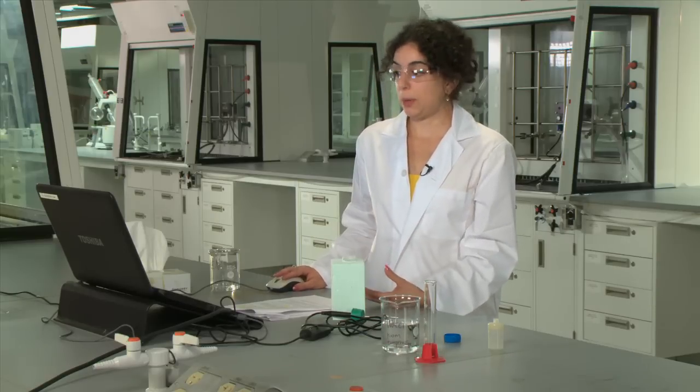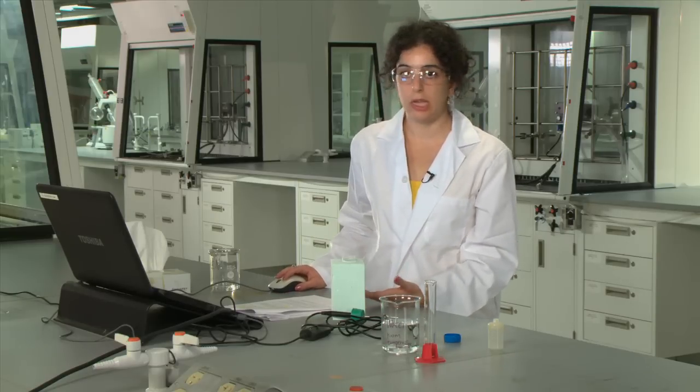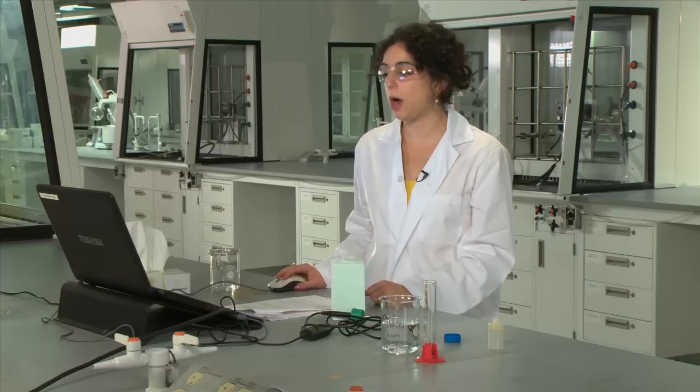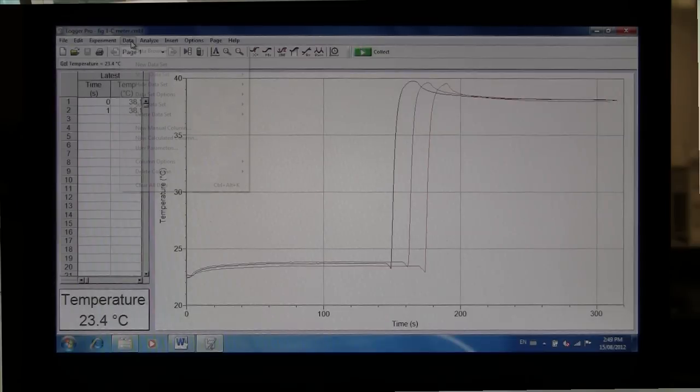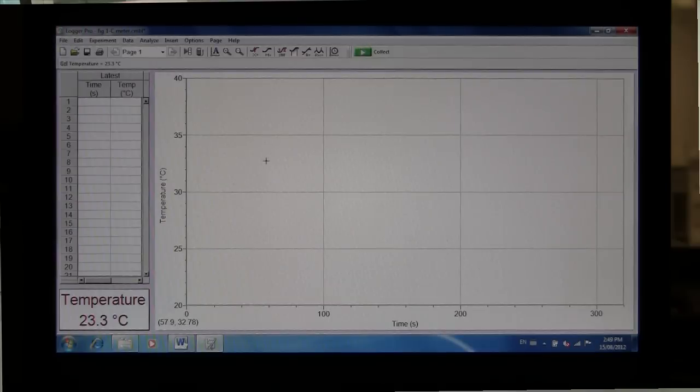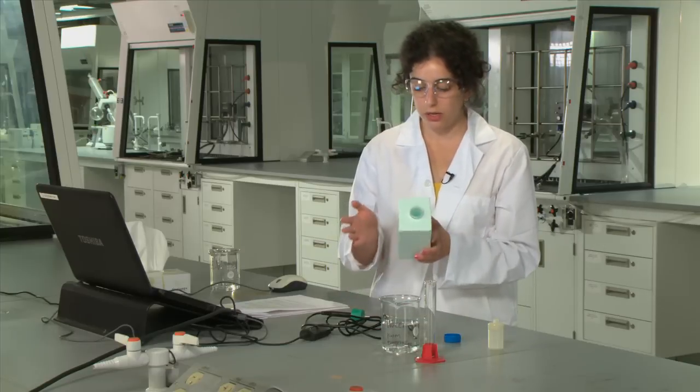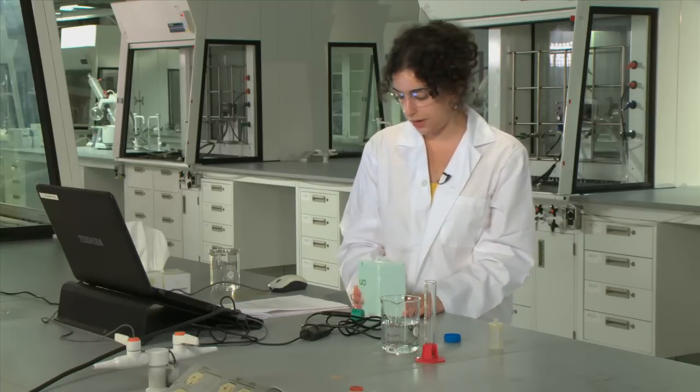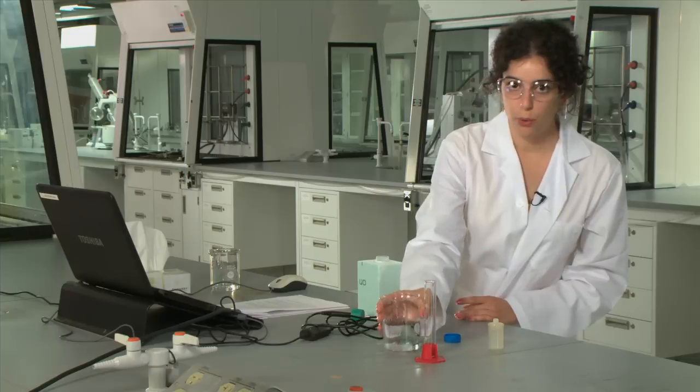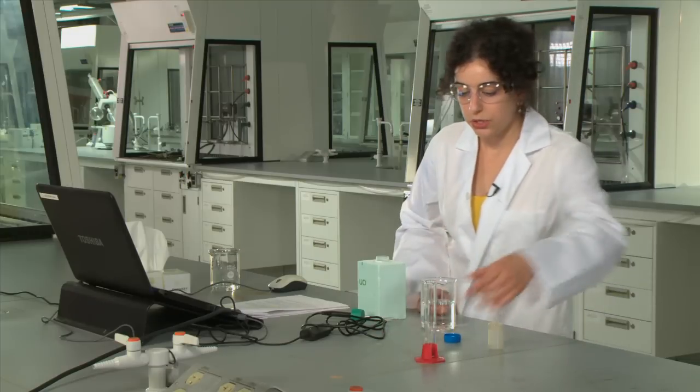For the next part of the experiment we're going to still use the same collection method that we used for the first part but we're going to remove these traces. To do that we're going to go to data and then select clear all data and now our graph is ready to go again for the second part of the experiment. So now we have our cleaned out calorimeter and we're going to add 35 mils of our room temperature water to the calorimeter.